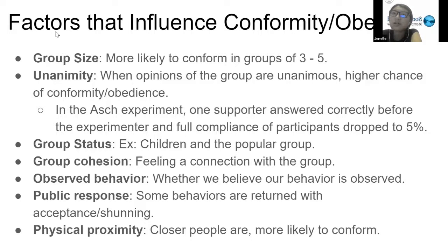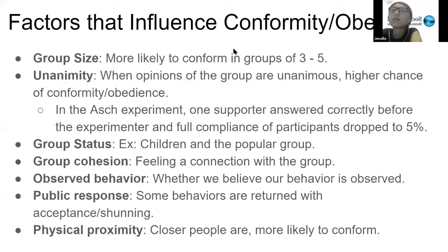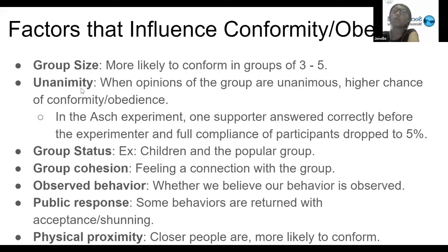Here I wanted to go over the factors that influence conformity and obedience. Group size is one factor — people are more likely to conform in groups of three to five. Unanimity is when opinions of the group are unanimous, and there is a higher chance of conformity and obedience.